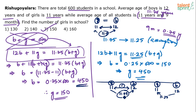When the average is more towards the boys, the number of boys is greater than the number of girls. When the average is more towards the girls, the number of girls is more than the number of boys.